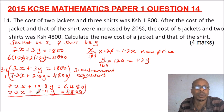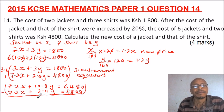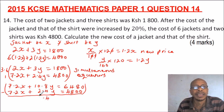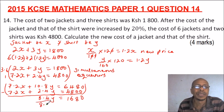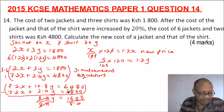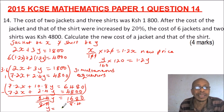We eliminate x by subtracting the second equation from the first. 7.2x minus 7.2x is 0. For the y terms: 10.8 minus 2.4 gives 8.4y. On the right side: 6,480 minus 4,800 gives 1,680. Dividing both sides by 8.4 gives y = 200. So the cost of a shirt is 200 Kenyan shillings.